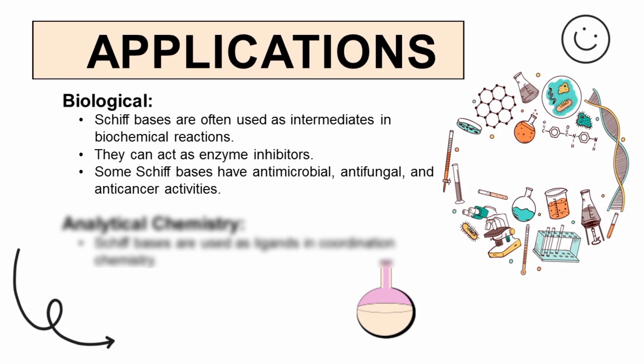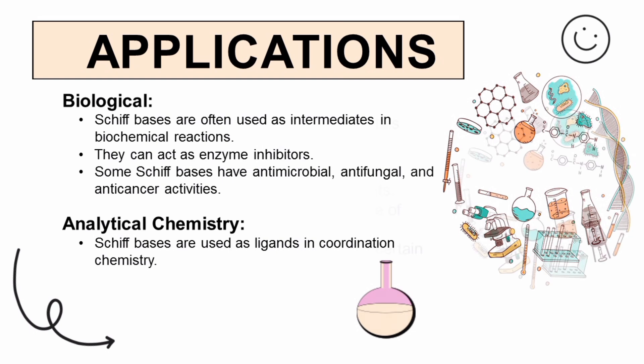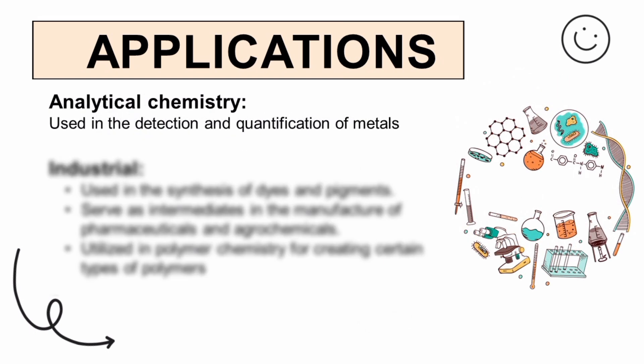In analytical chemistry, Schiff bases can be used as ligands and in the detection and quantification of metals. Although Schiff bases are known to be good chelating agents that are easily prepared and characterized, there is limited interest in their analytical use due to serious drawbacks: they are insoluble in aqueous solutions but soluble in most organic solvents, and easily decompose in acidic solutions.